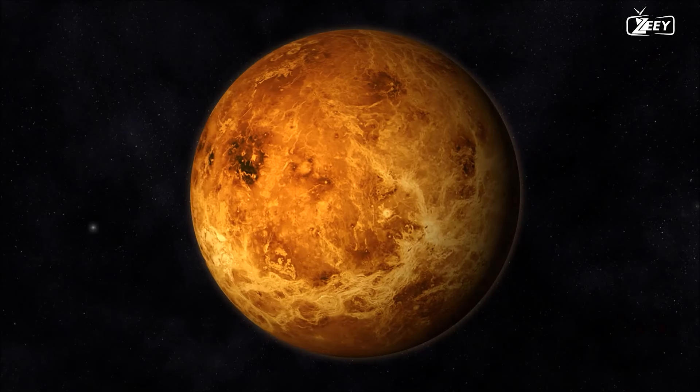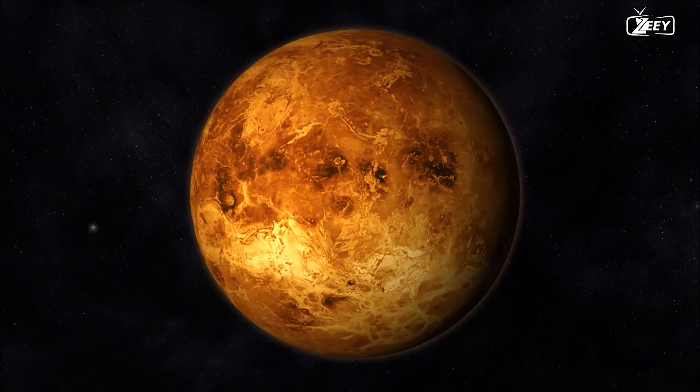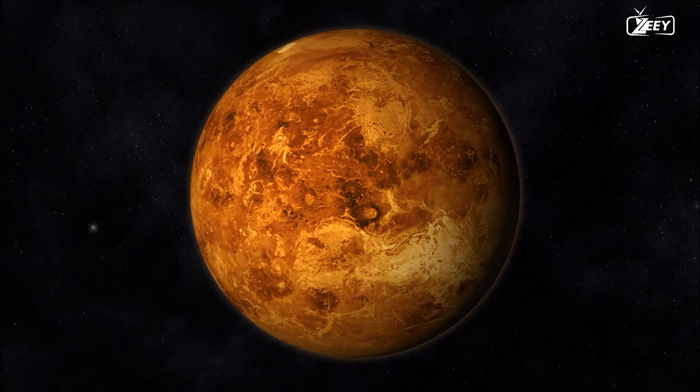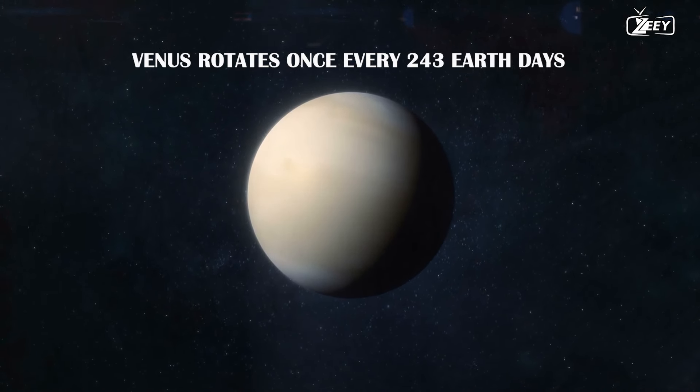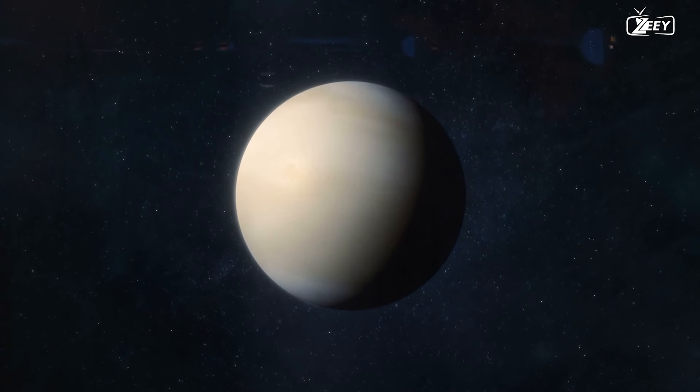Before delving into the greenhouse effect, consider this: Venus's slow and retrograde rotation is an unusual trait that may have contributed to its harsh atmospheric conditions. Venus rotates once every 243 Earth days, which is longer than its year, hence a day on Venus lasts longer than a year.